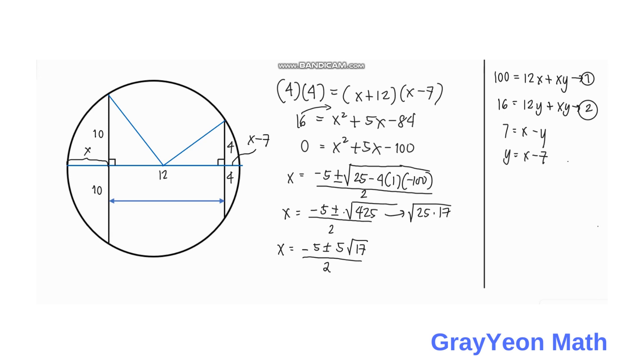We have two answers here, plus and minus, but actually we are going to use only the negative 5 plus 5 square root of 17, all over 2. Because if we use the negative 5 minus option, it will become negative and it is invalid.